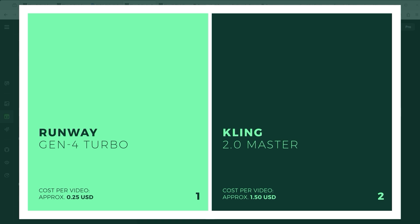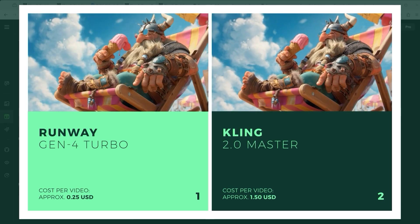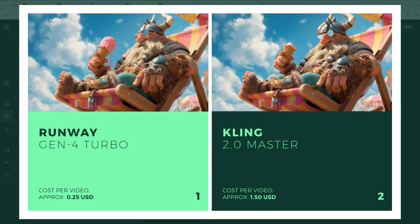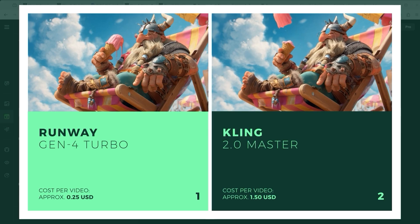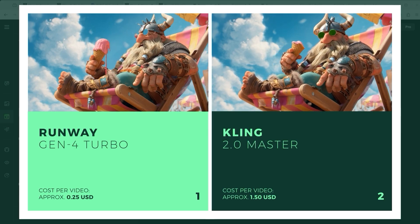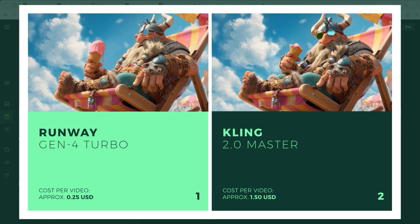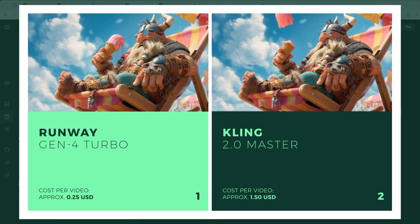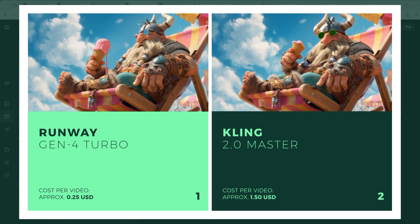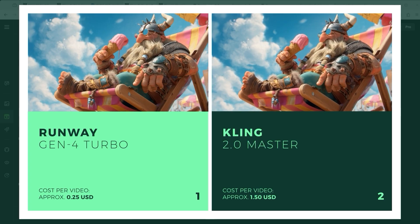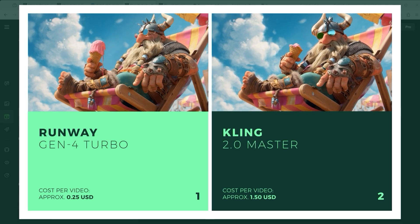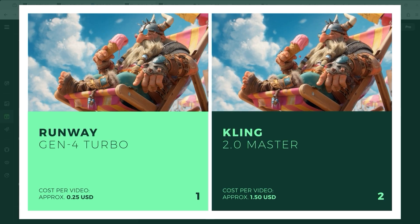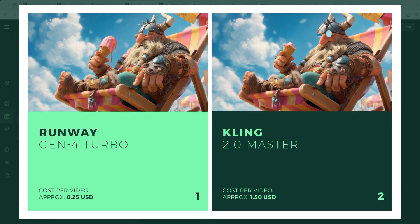The direct comparison is quite shocking — Kling 2.0 is pretty expensive. If you want to use the prompts I used to create the nine videos, just go to the description below and copy them. In the first example we see a Viking on a deck chair sucking on his ice cream and laughing heartily. A wonderful realisation in which many details are right, but only with Kling. That's why Kling 2.0 is the winner here.